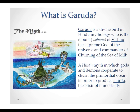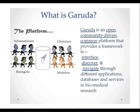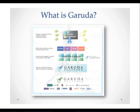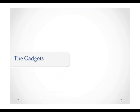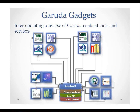This brings us to what is Garuda. I wanted to briefly start with the mythology. Garuda is a bird in Hindu mythology which played a very critical role in the churning of the sea of milk. Gods and demons collaborated together, and Garuda as the bird was the platform — the Sanskrit word is vahana — for the supreme god who was the commander in chief for this event. We believe that given the complexity of biological systems, we need such a platform: open, community-driven, providing a framework to interface, discover, and navigate through different gadgets, so informaticians, clinicians, biologists, and modelers can work together.